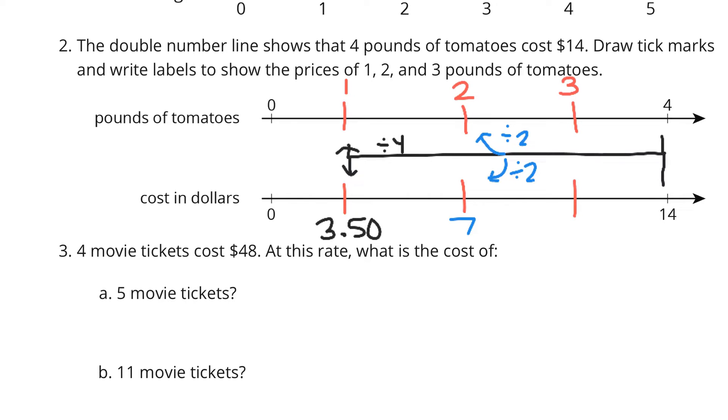But I definitely think once you have the 350 for 1 pound, you could take the 1, multiply by 3 to get 3. And so $3.50 times 3 is $10.50 for the 3 pounds of tomatoes.